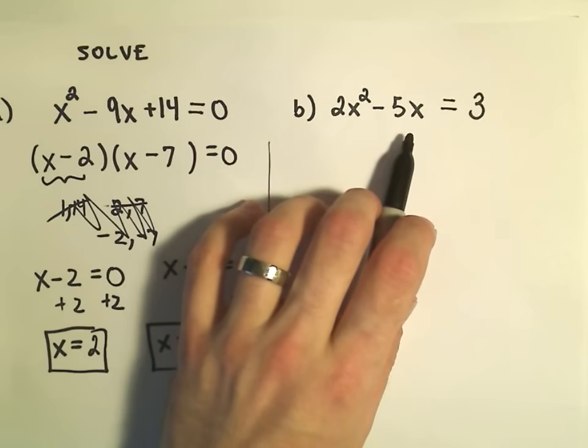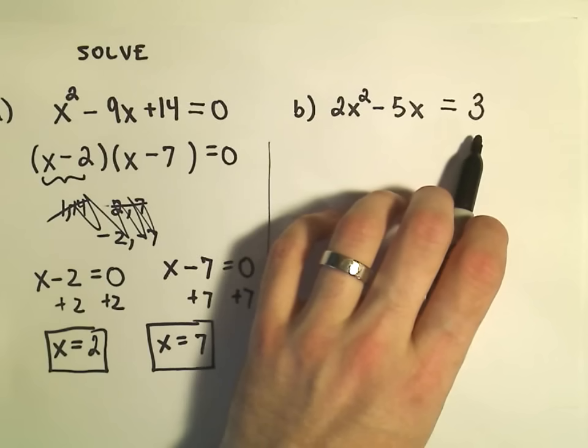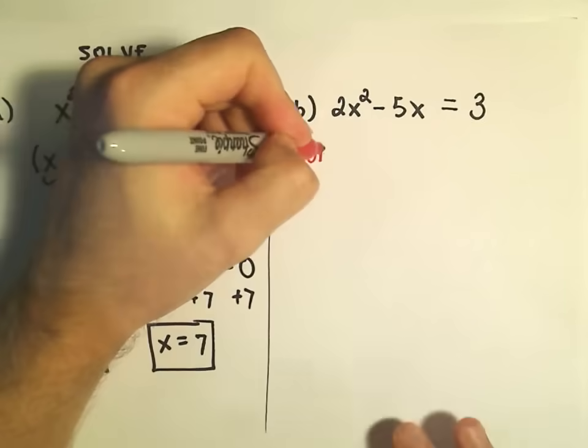Alright, 2x squared minus 5x equals 3. The first thing we're going to have to do is make one side equal to 0. A big common mistake, this is something you don't want to do.